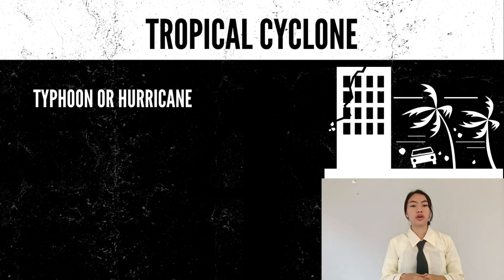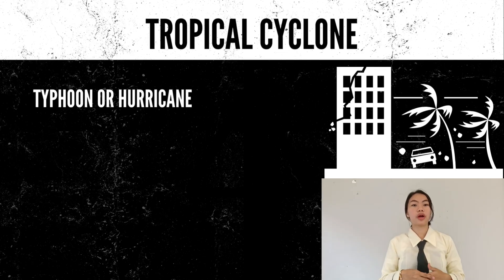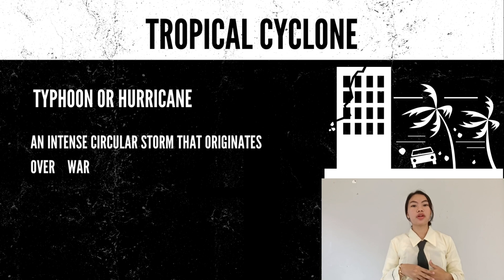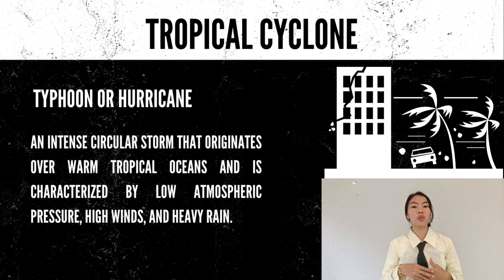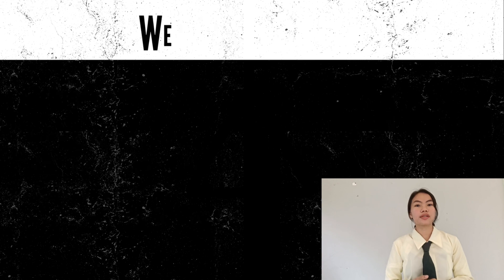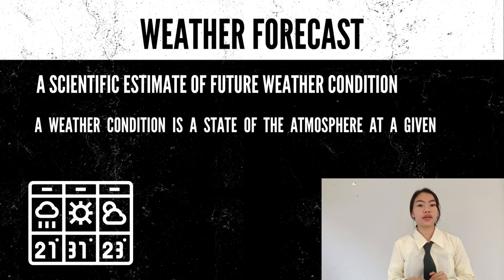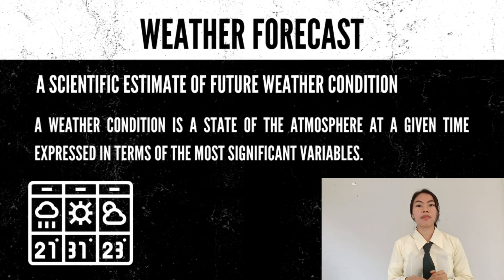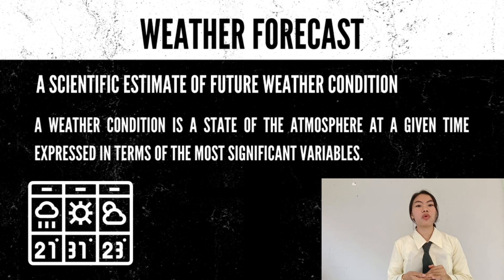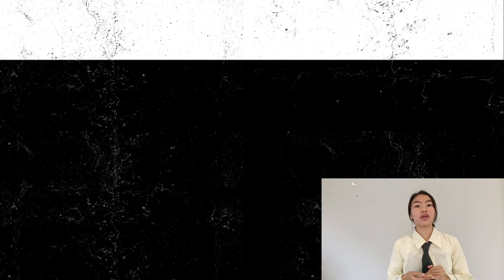Tropical cyclone, also called typhoon or hurricane, is an intense circular storm that originates over warm tropical oceans. It is characterized by low atmospheric pressure, high winds, and heavy rain. Weather forecast is a scientific estimate of a future weather condition, wherein a weather condition is the state of the atmosphere at a given time expressed in terms of the most significant variables.